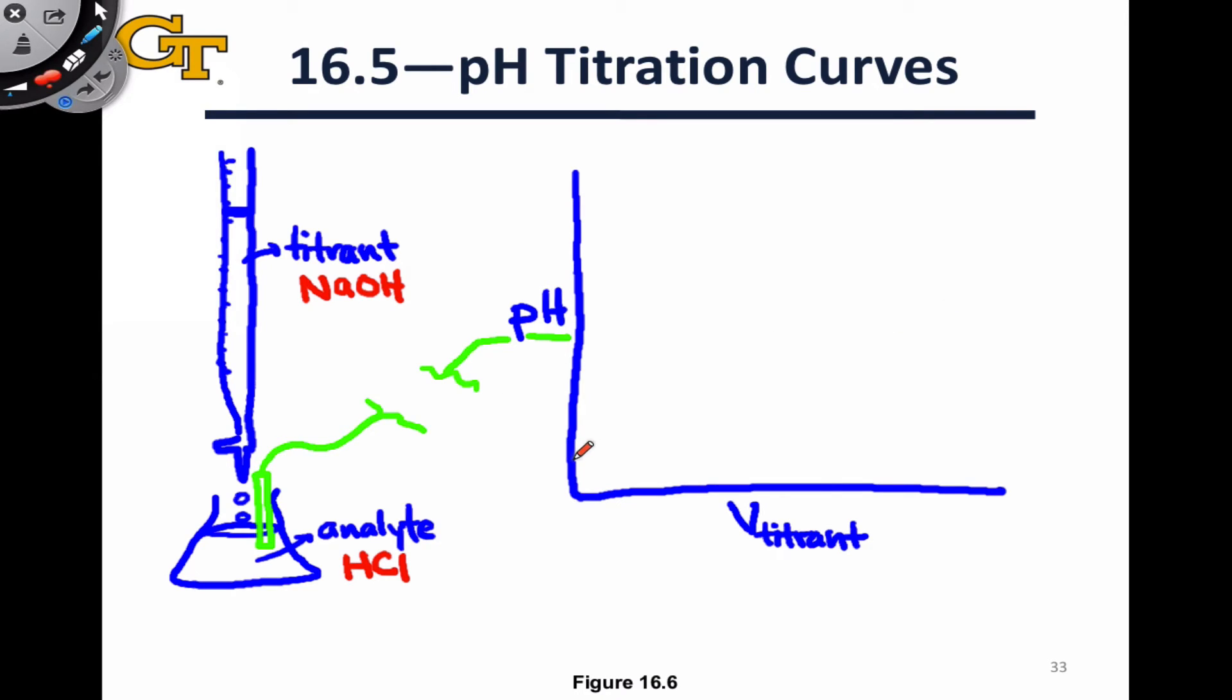So early in the titration, we start at a pH that's less than 7. That should make sense, since we're beginning with an analyte solution of a strong acid, HCl. As we add the titrant, that pH increases. It starts out increasing slowly, but then pretty quickly starts to ramp up, and eventually flattens out again.